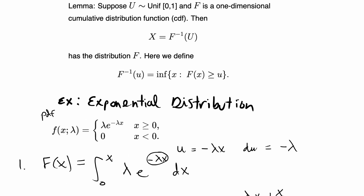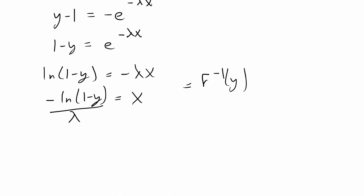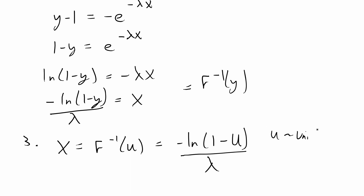To do that I'm going to subtract 1 from both sides then multiply by negative 1, so that's 1 minus y is equal to e to the negative lambda x. I'm going to take the natural log of both sides. That gives me negative lambda x on the right-hand side. Then I multiply by negative 1 and divide by lambda on both sides, so that gives me x is equal to negative log of 1 minus y divided by lambda. So f inverse of y is equal to negative ln of 1 minus y over lambda. The third and final step is we just plug in the random variable u, so x is equal to f inverse of u, which is negative ln of 1 minus u over lambda, where u is a uniformly distributed random variable from 0 to 1 inclusive.